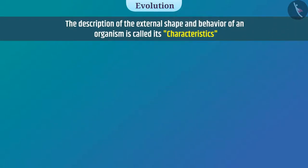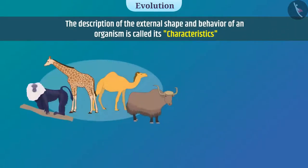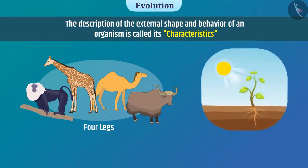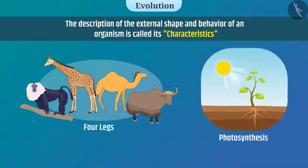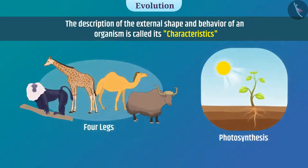For example, different organisms have four legs — that is a characteristic. Plants can do photosynthesis — that is also a characteristic. We can classify organisms on the basis of similar characteristics.